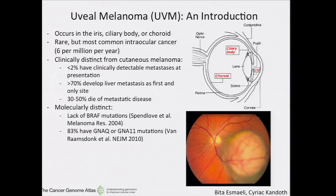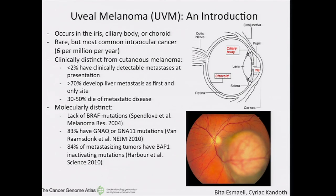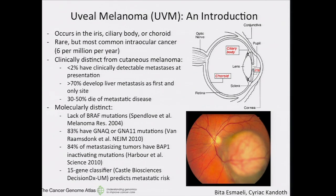These tumors are also very molecularly distinct from cutaneous melanomas. They don't have BRAF mutations, and instead have GNAQ and GNA11 mutations, as well as about 80% of metastasizing tumors specifically having BAP1 inactivating mutations as seen in papers in the past. Currently the most common prognostic test in the clinic is a 15-gene classifier developed by Castle Biosciences that predicts metastatic risk fairly accurately.